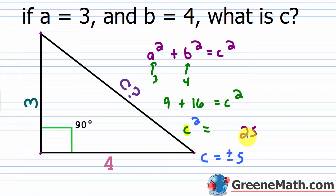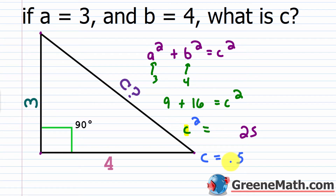In this specific situation I only need the principal square root, so c equals positive 5. Why? Because I'm thinking about a distance — the measure of c — and that can't be negative. Negative 5 is a nonsensical answer here; it can only be positive 5. Now we're going to apply this same approach to find the distance between two points on a coordinate plane.